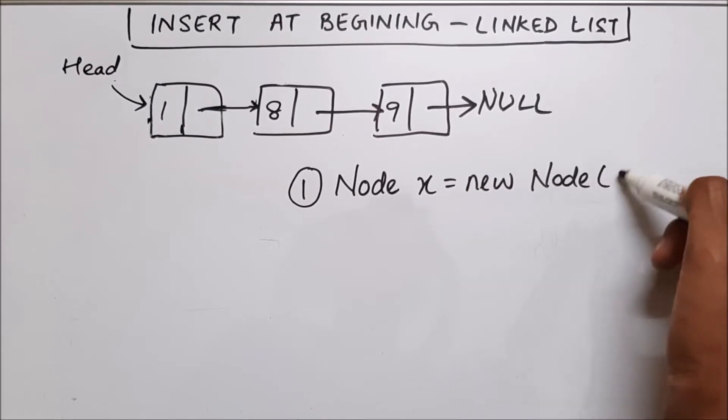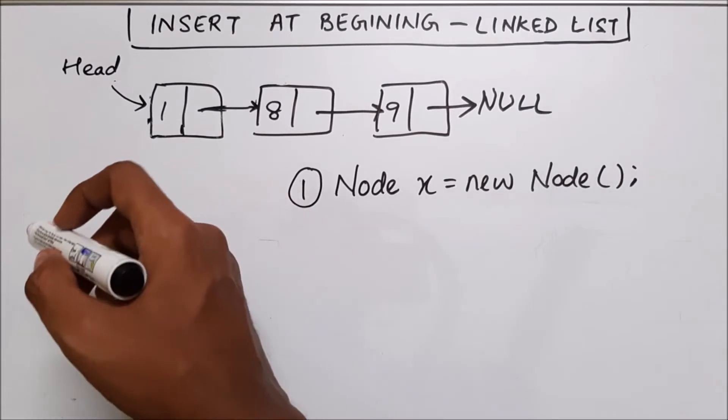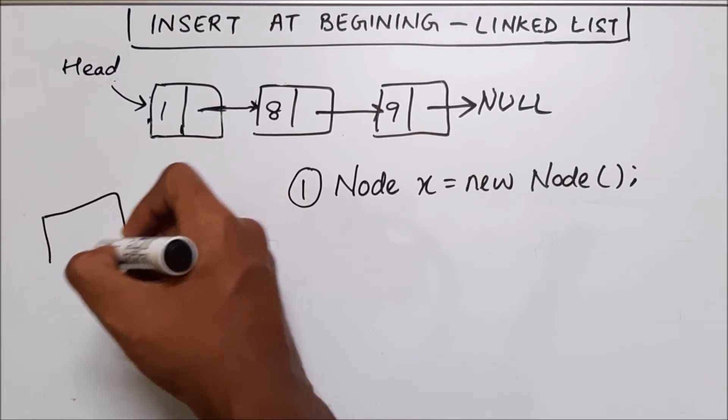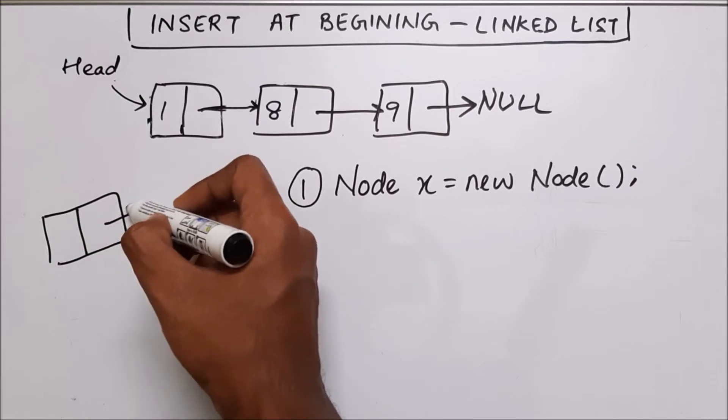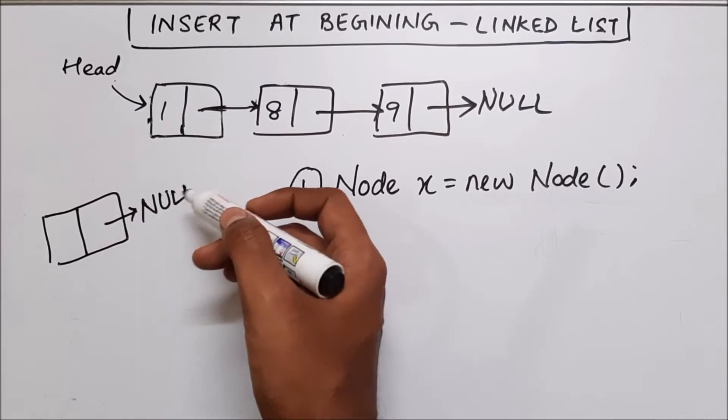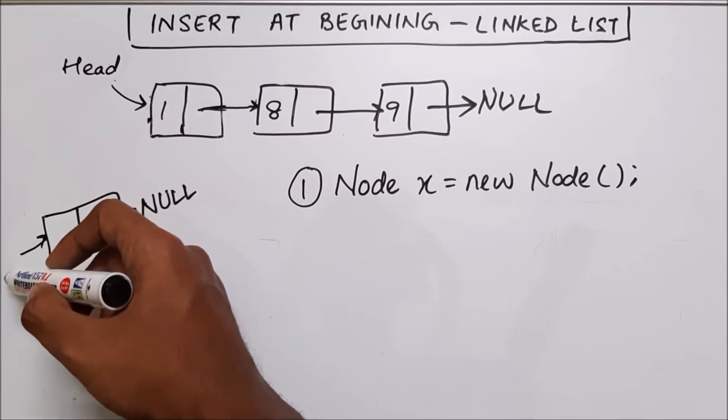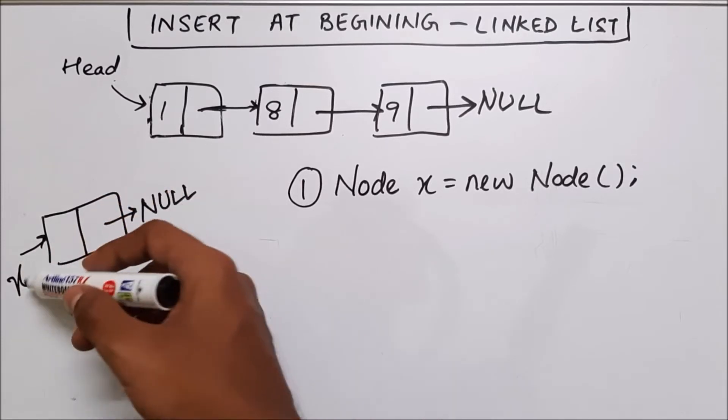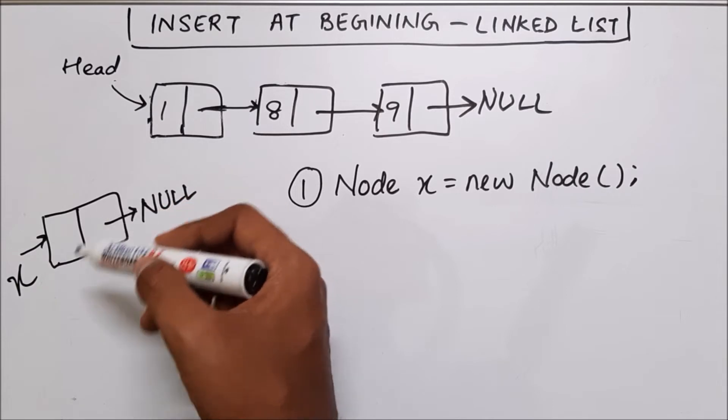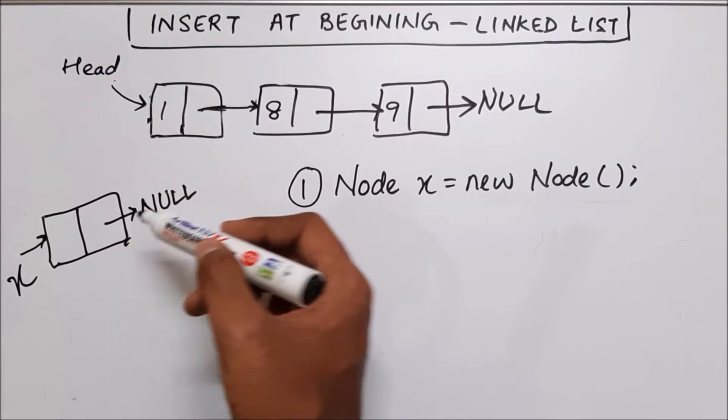So this will create a node for us. So let's say our node looks something like this and its address part has null because we haven't put anything over here and this is x. So x is pointing to this node and this node has no address in its address part.